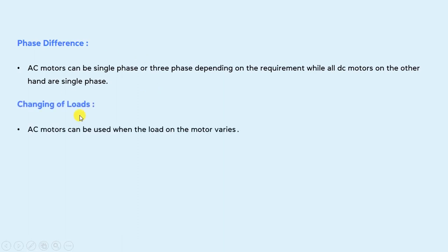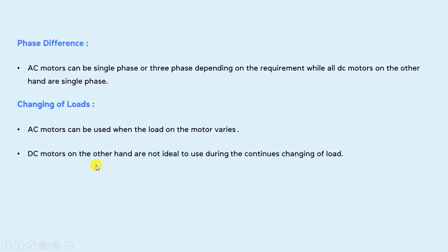The next point is the changing of load. AC motors can be used when the load only moderately varies. On the other hand, DC motors are not ideal to use during the continuous changing of load. So in the case of a constant load, DC motors are preferable, whereas AC motors can be used when the load moderately varies.